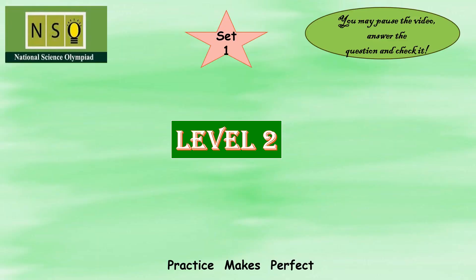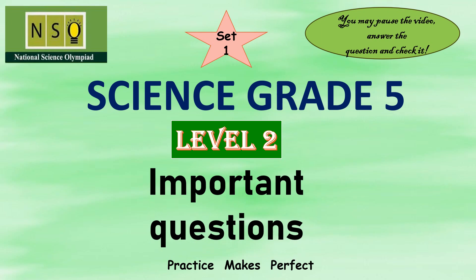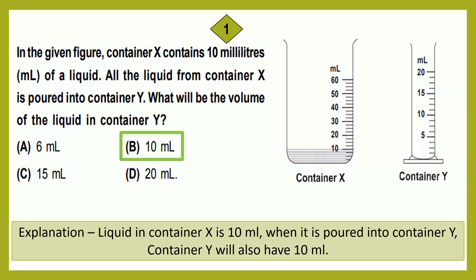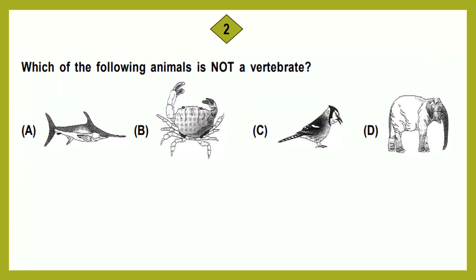National Science Olympiad Grade 5 Level 2 important questions. Question number 1: In the given figure, container X contains 10 milliliters of a liquid. All the liquid from container X is poured into container Y. What will be the volume of the liquid in container Y? The correct answer is option B, 10 ml. When 10 ml is poured into container Y, container Y will also have 10 ml.